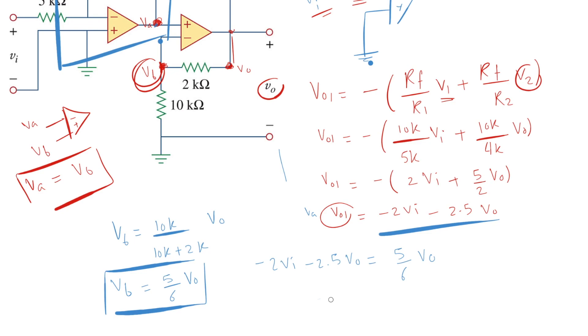So if we rearrange, it will be minus 10 over 3 Vout is equal to 2Vi. So Vout over Vi is equal to minus 2 times 3 over 10, which is minus 6 over 10, which is minus 0.6. And there are no units because it's output over input, and this is what we call a gain.